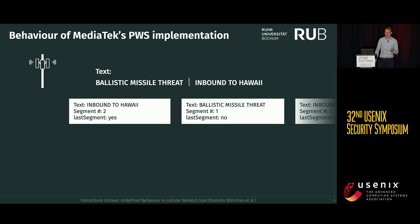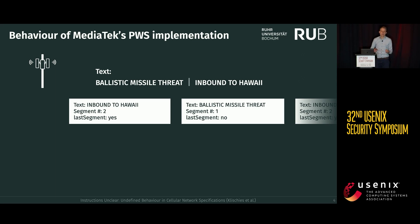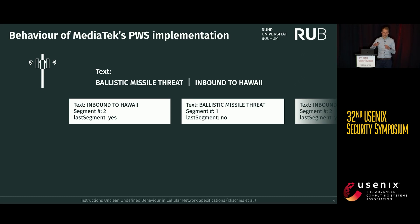For example, assume we have the text 'ballistic missile threat inbound to Hawaii' and we want to split it between 'threat' and 'inbound.' Since this is periodically broadcasted and not to a specific phone, a phone might enter the vicinity of the cell tower at any time. It could receive the messages out of order — it might enter after the first segment has been sent but before the second, and then receive the second segment first.